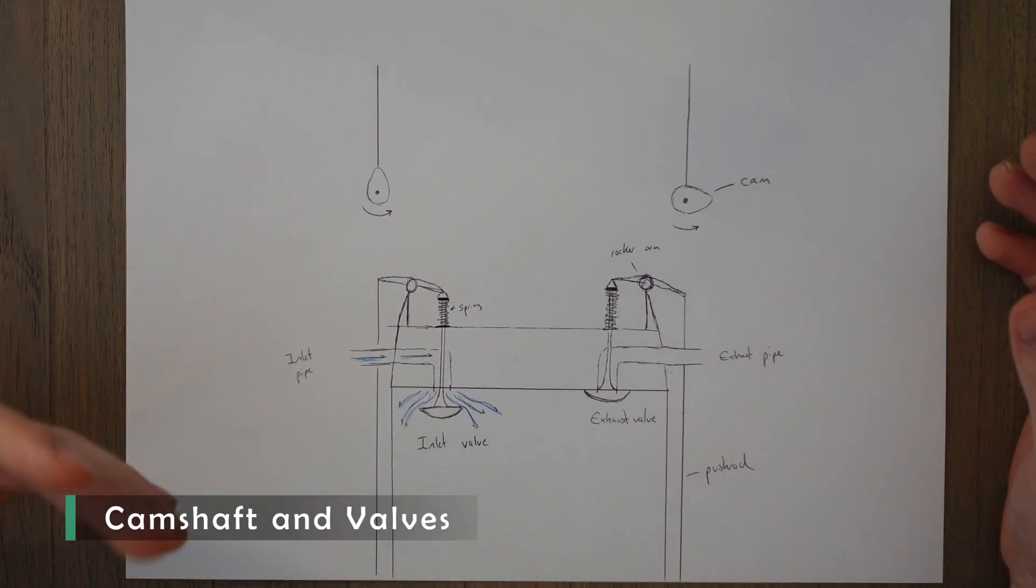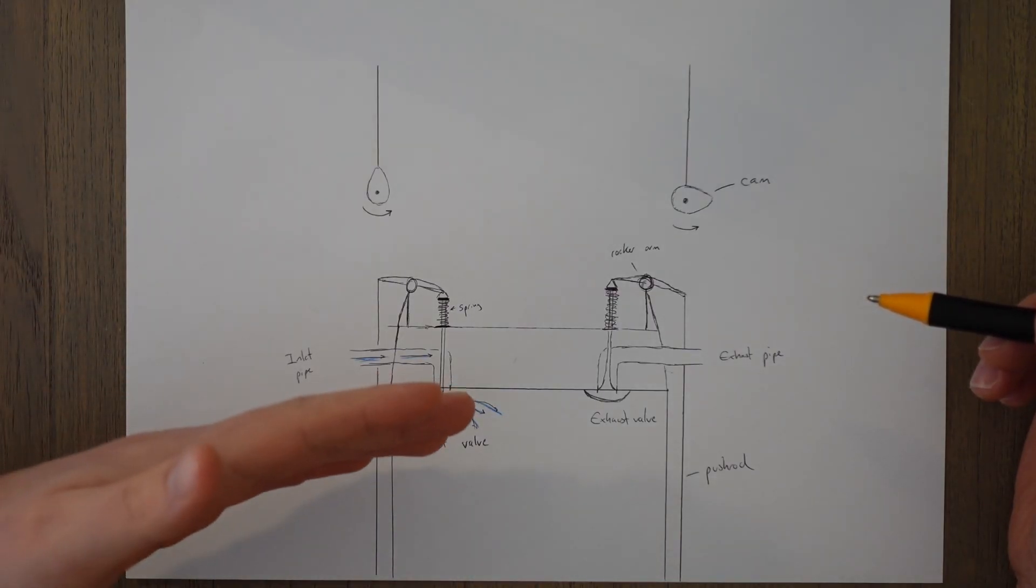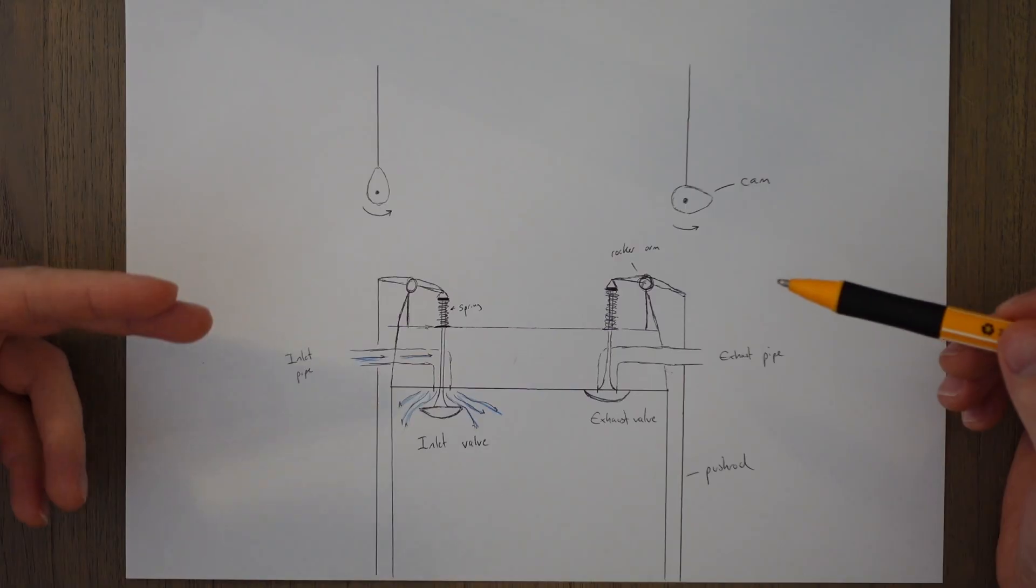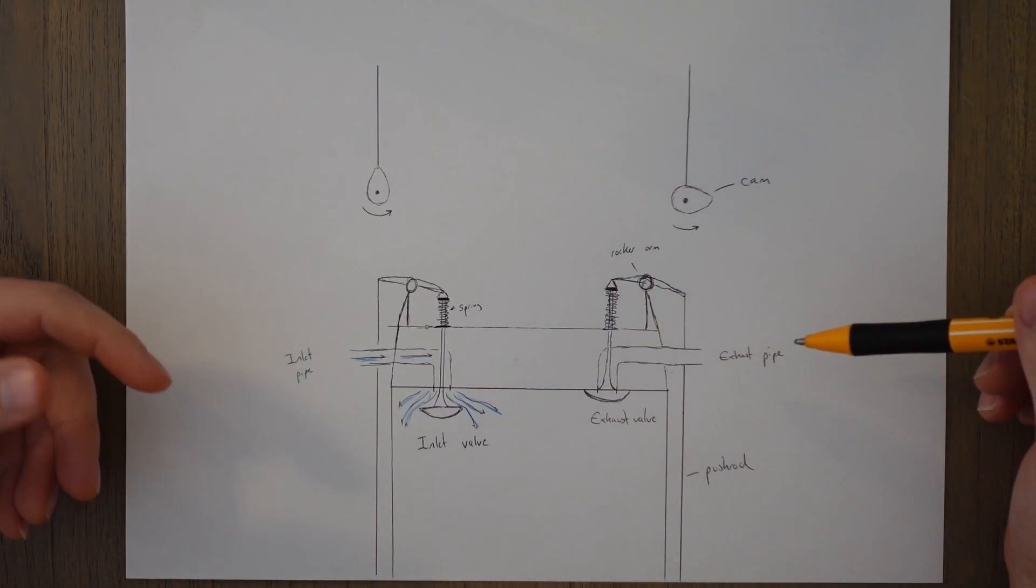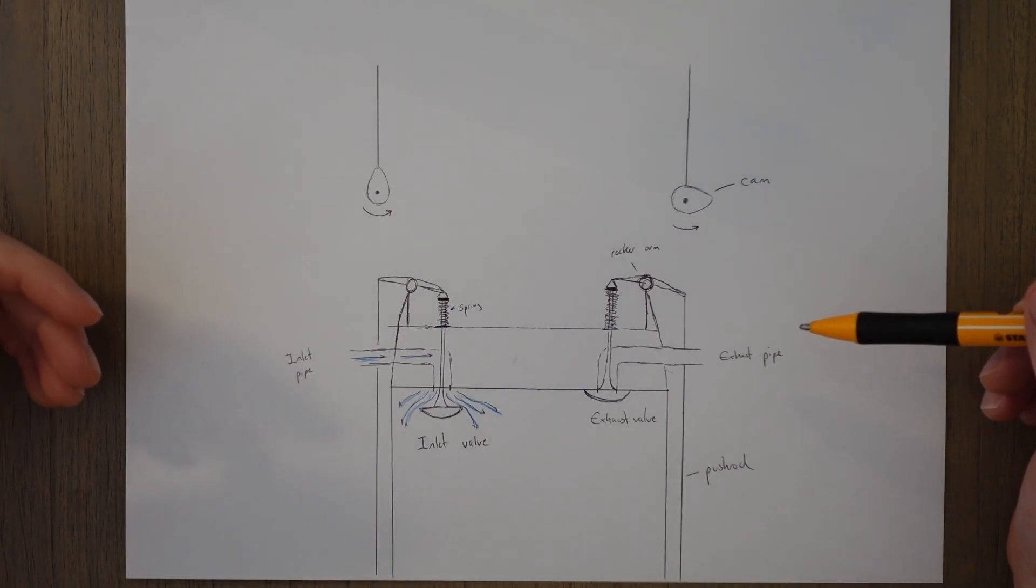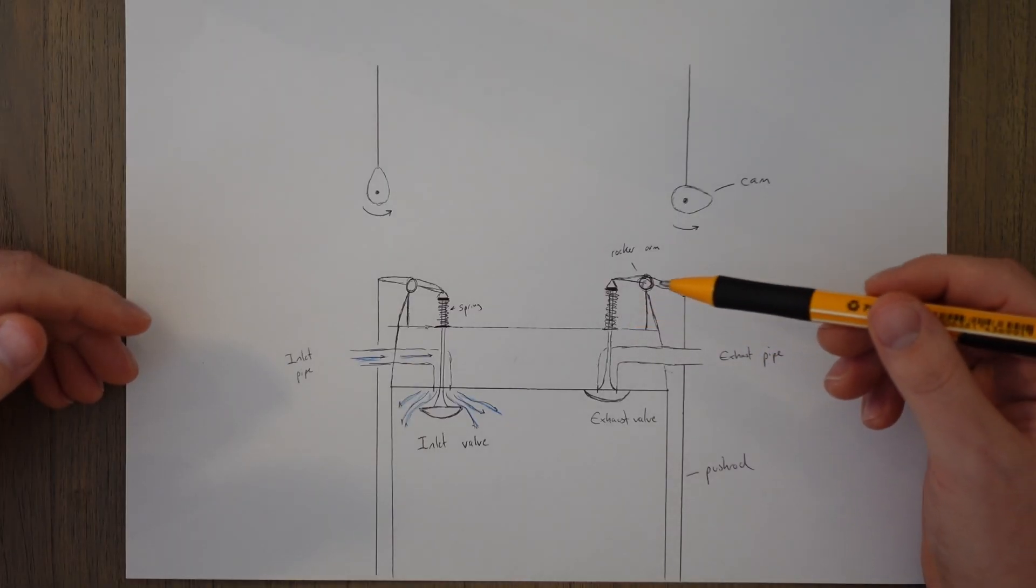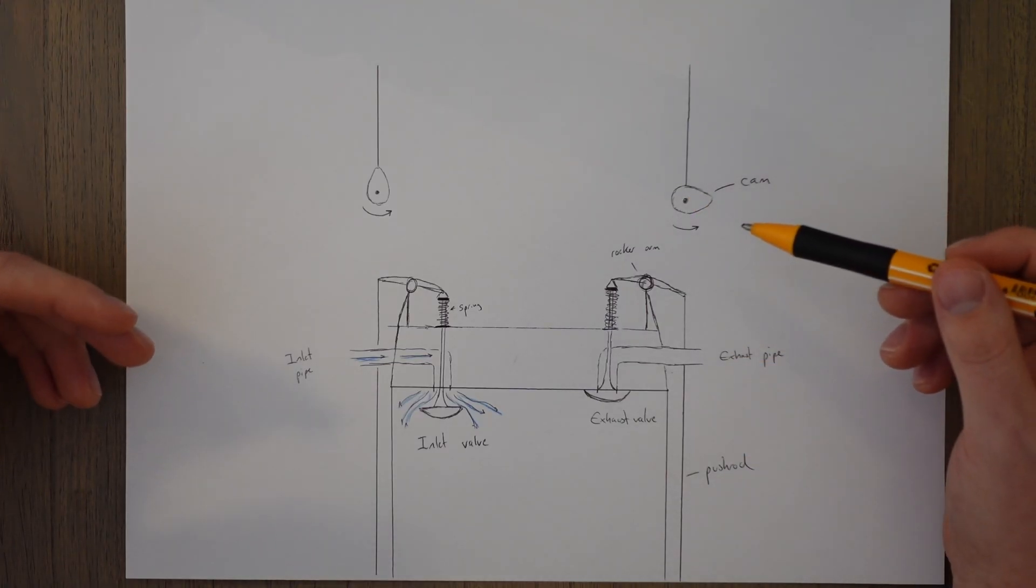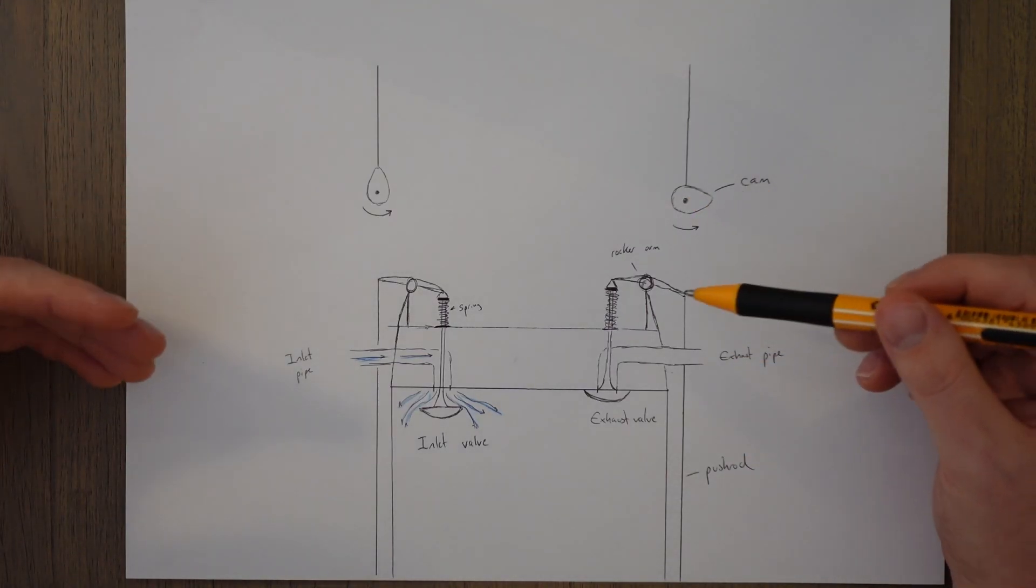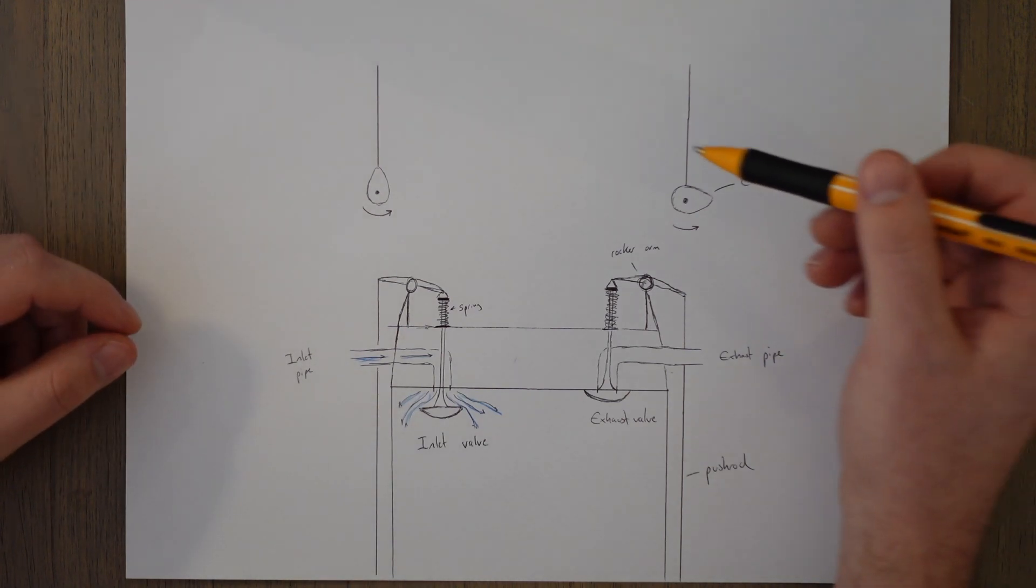A camshaft or multiple camshafts are connected to the crankshaft via gears, and it runs at half the speed of the crankshaft. This is because it is used to time the opening and closing of the inlet and exhaust valves. The valves are spring-loaded into the closed position and then they are opened up at the correct time via the camshaft and push rods, or the camshaft can be directly connected to the valves.